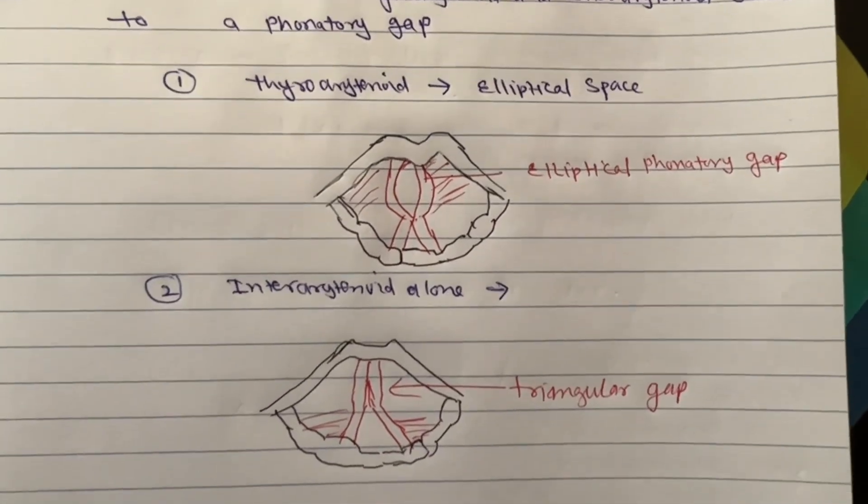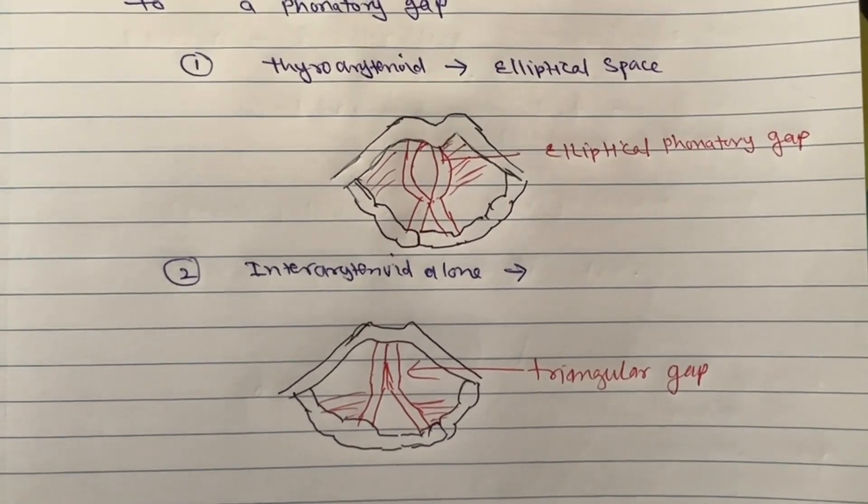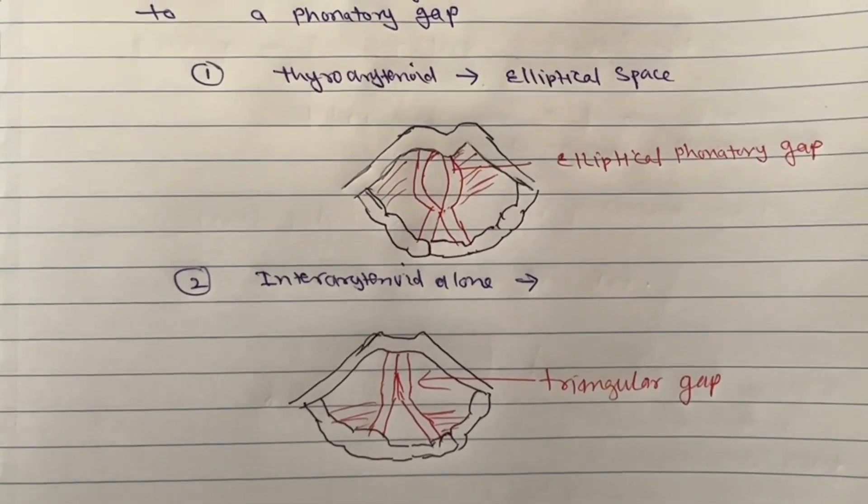If interarytenoid muscle is involved, then it is a triangular gap posteriorly.